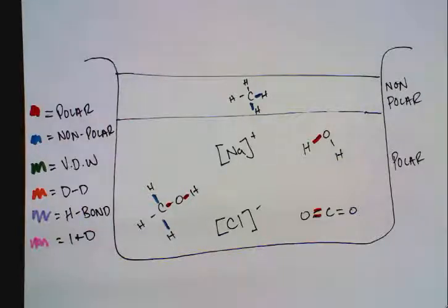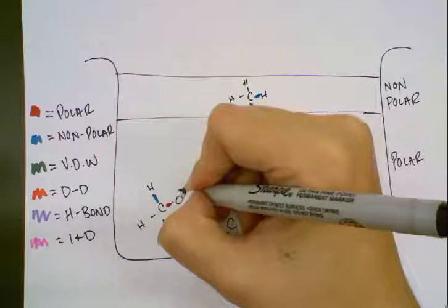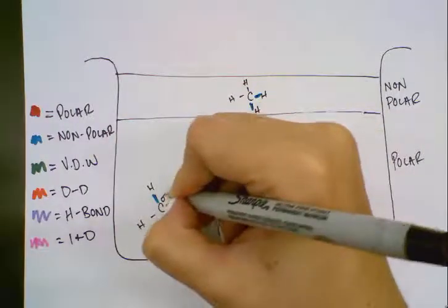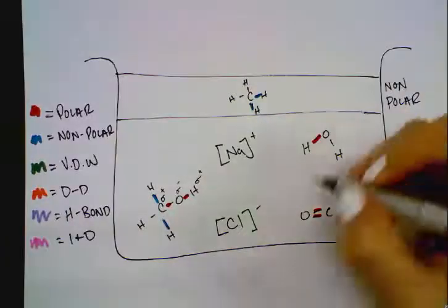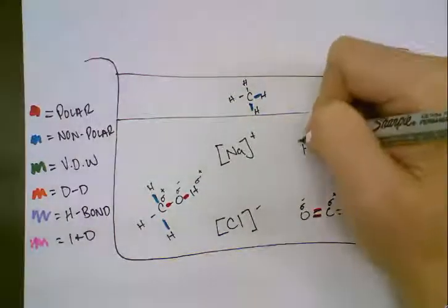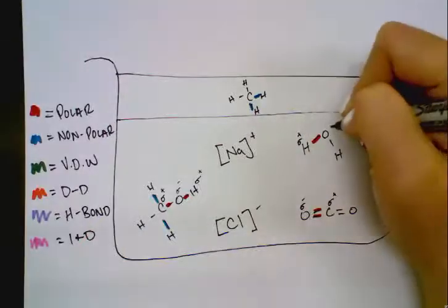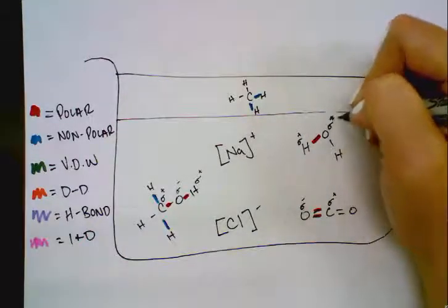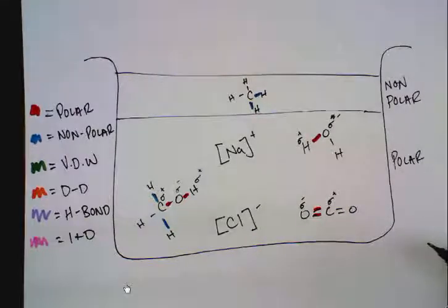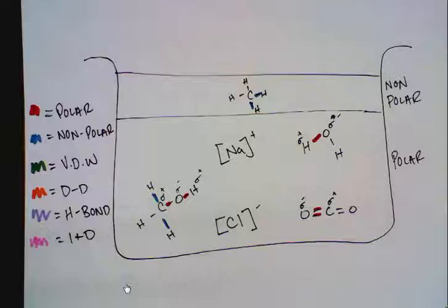After you've done that, you also will want to label in as well so your teacher knows that you know where some areas of partial negative and partial positive charge is. We know any time there is an unequal sharing of electrons, there's going to be partial charge. So I've labeled in some of my areas of charge so my teacher knows I know what I'm doing.